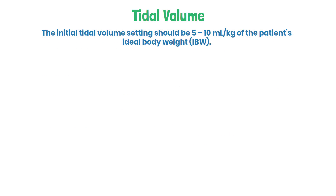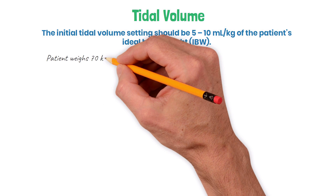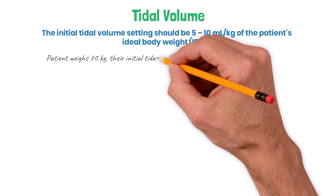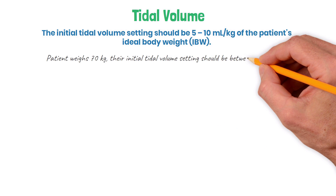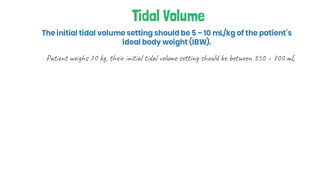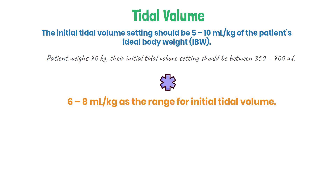The initial tidal volume setting should be five to ten milliliters per kilogram of the patient's ideal body weight. So if a patient weighs 70 kilograms, their initial tidal volume setting should be between 350 to 700 milliliters. Many of you were probably taught to use six to eight as the range for the initial tidal volume, and yes, that one is technically correct as well — and even more precise than the five to ten range.